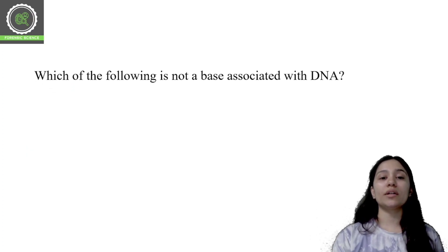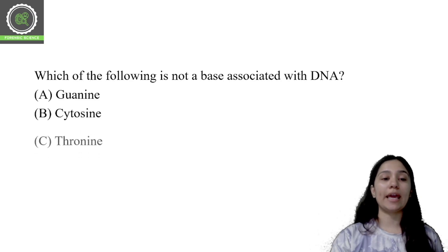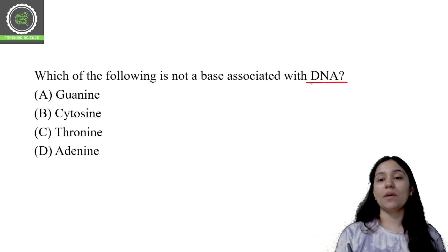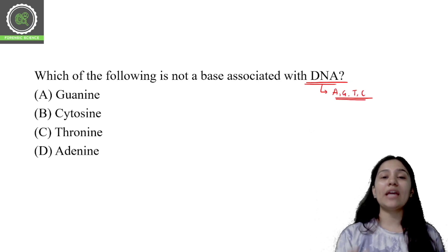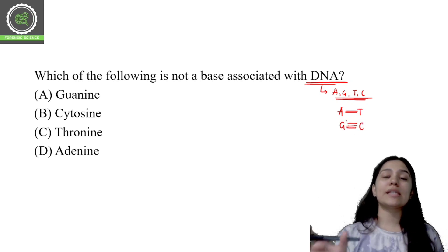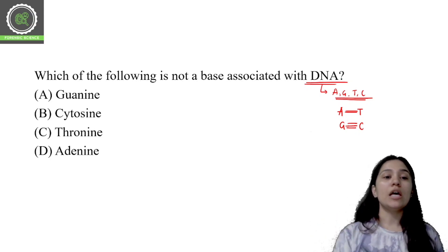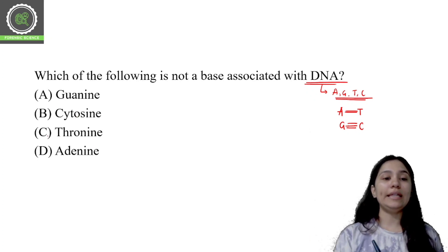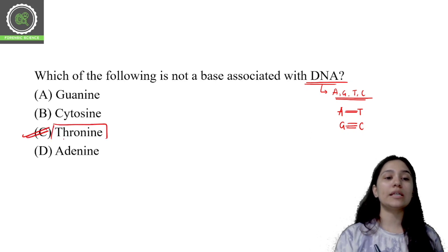Next question: which of the following is NOT a base associated with DNA? DNA has four bases — purines and pyrimidines: adenine (A), guanine (G), thymine (T), and cytosine (C). A pairs with T via two hydrogen bonds, and G pairs with C via three hydrogen bonds. AGTC stands for adenine, guanine, thymine, and cytosine. Therefore, thyronine (thironine) is the correct answer — it is not associated with DNA.